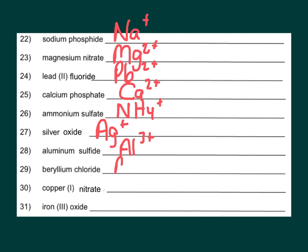Aluminum, that's a three plus. Beryllium, that's a two plus. Copper one must mean that's just a plus. Iron three, that must be a three plus.